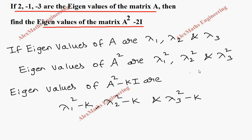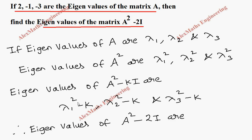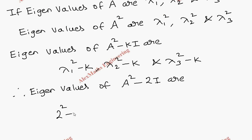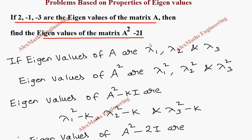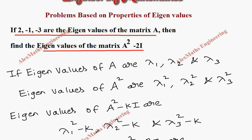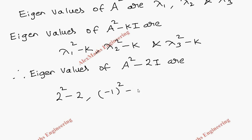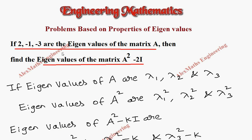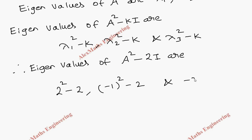Therefore, the eigenvalues of A square minus 2I are: lambda 1 square minus 2, where lambda 1 is 2, so 2 square minus 2; lambda 2 is minus 1, so minus 1 whole square minus 2; and lambda 3 is minus 3, so minus 3 whole square minus 2. This gives us 4 minus 2, 1 minus 2, and 9 minus 2.